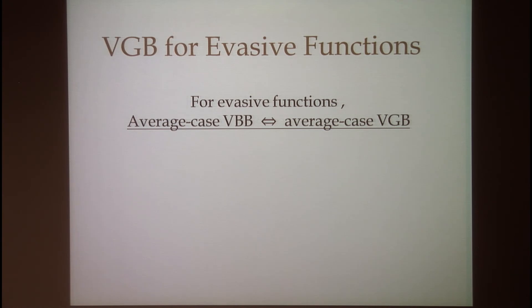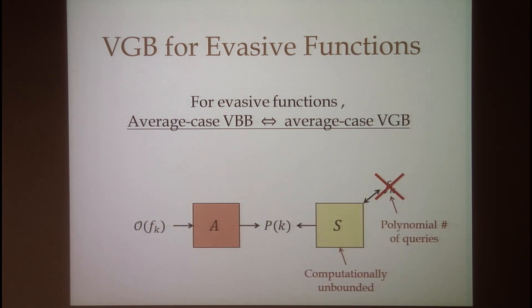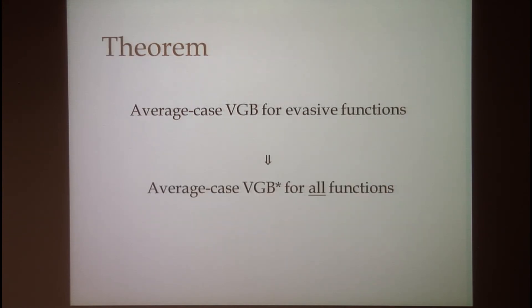Our first observation is that for evasive functions, average case VBB and average case VGB are equivalent. The reason is that if the simulator is only making a polynomial number of queries to a random evasive function, it really doesn't matter if the simulator is computationally unbounded — the oracle will still be useless, just as in the VBB case. So at least for evasive functions, average case VGB is meaningful. We then proved that the existence of average case VGB for all evasive functions implies the existence of a slightly weaker form of average case VGB for all functions.